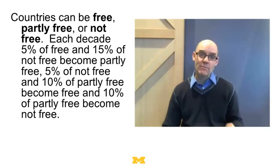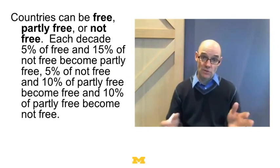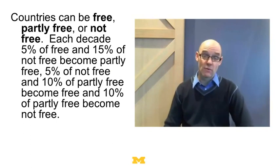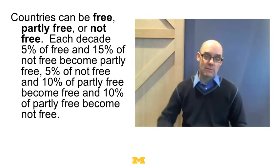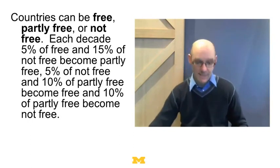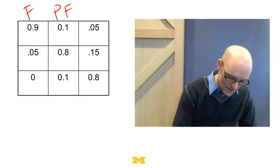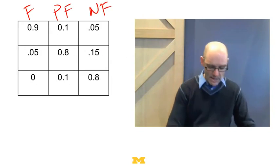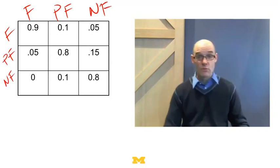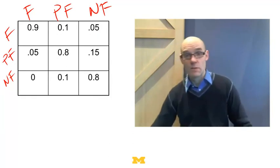Each decade 5% of free and about 15% of not free become partly free. And 5% of not free and 10% of partly free become free. And 10% of partly free become not free. So all sorts of transition probabilities are kind of complicated. The matrix is more useful. So I can put free, partly free, and not free right here, and then I can put free, partly free, and not free here. And now I've just got three states. So it's just like I had before, except for instead of a two by two matrix, I've got a three by three matrix. Same thing goes.